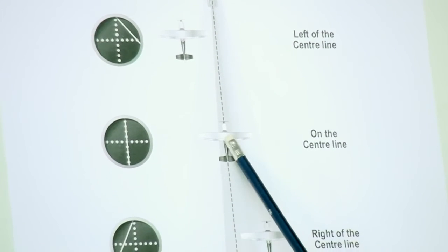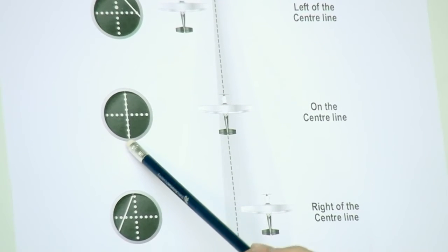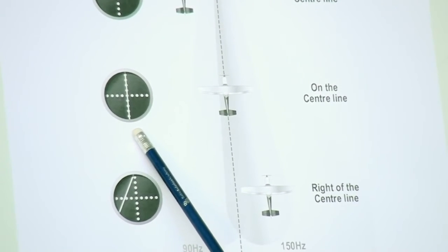If there is equal depth modulation, the indicator will show us that we are exactly on the center line.